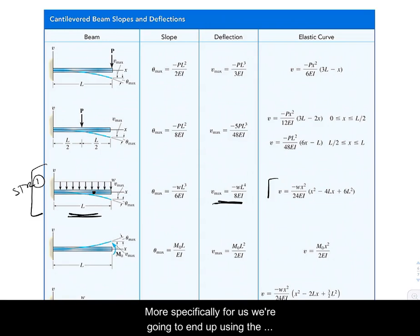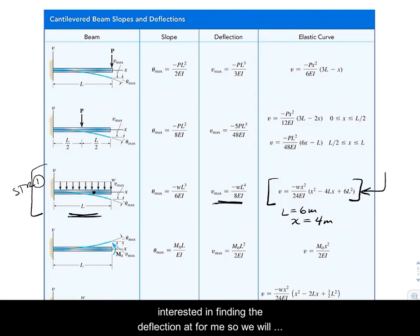And again though we were not interested in the deflection at the end, but what we were interested was a deflection somewhere in the middle of the beam. So more specifically for us we're going to end up using the deflected curve, the elastic curve. And what we have is a beam that is six meters long, but we're going to be interested in finding the deflection at four meters.